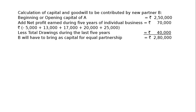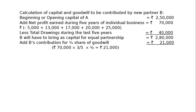B has to contribute Rs. 2,80,000 for capital. And for goodwill, add B's contribution for half share of goodwill, that is Rs. 21,000. Rs. 42,000 is the goodwill of the firm. Rs. 70,000 is the total profit, and it is 3 years' purchase of 5 years' average profit as goodwill. Hence, Rs. 70,000 divided by 5 gives a yearly average of Rs. 14,000, multiplied by 3, coming to Rs. 42,000.